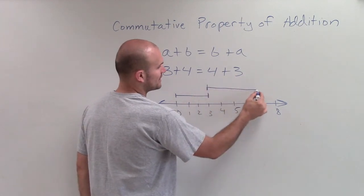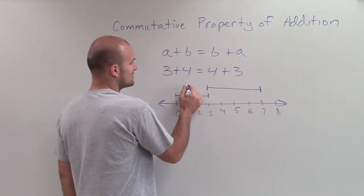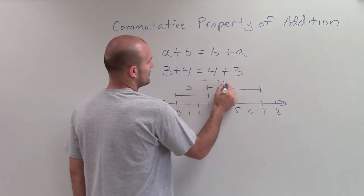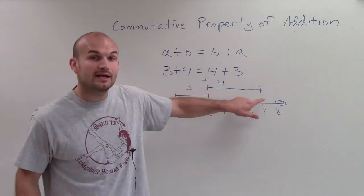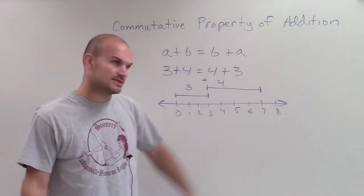So it would be 1, 2, 3, 4. And you could see, so I have 3 plus 4. You can see from here, I end up getting 7, which we knew was the answer.